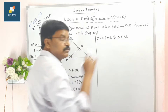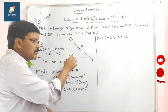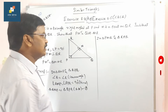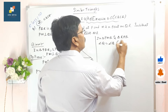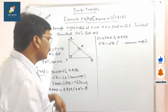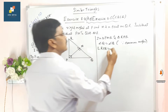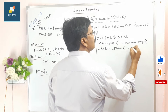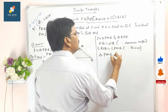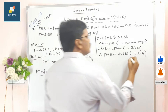In triangle PMQ and triangle RPQ, angle Q is equal to angle Q — these are common angles. And angle RPQ is equal to angle PMQ, as given in the statement. Therefore, triangle PMQ is similar to triangle RPQ, since AA similarity theorem. This is equation number two.